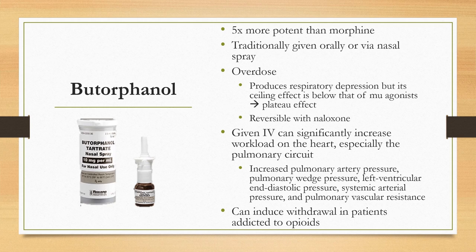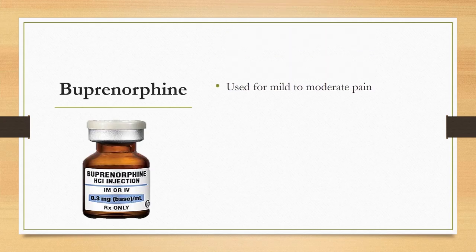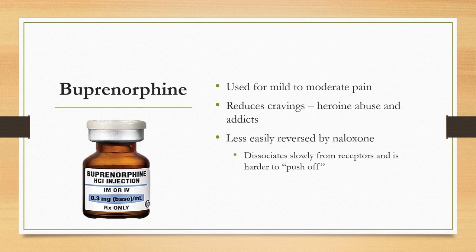Buprenorphine is an agonist-antagonist used for mild to moderate pain relief and is also often used to reduce cravings in people recovering from heroin addiction. It is less easily reversed than other drugs by naloxone because of its high affinity for the mu receptor, which makes it harder to displace from the receptor and allows it to dissociate slowly.